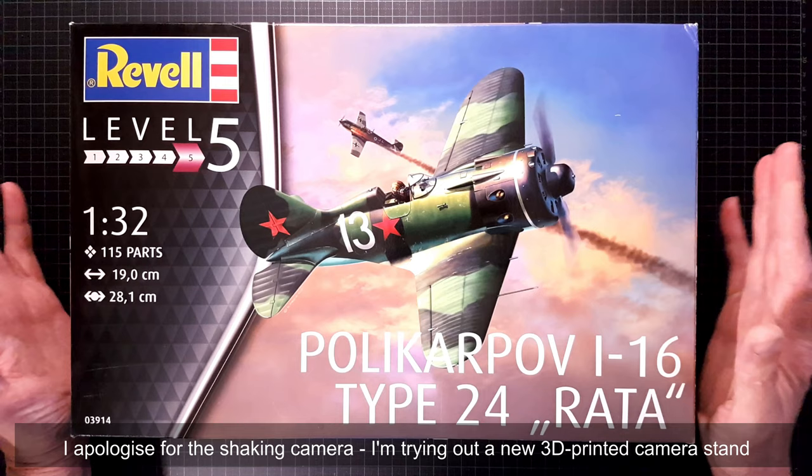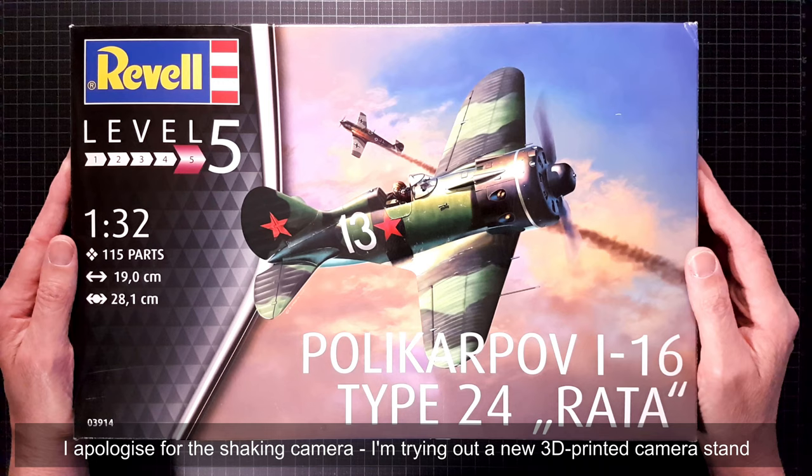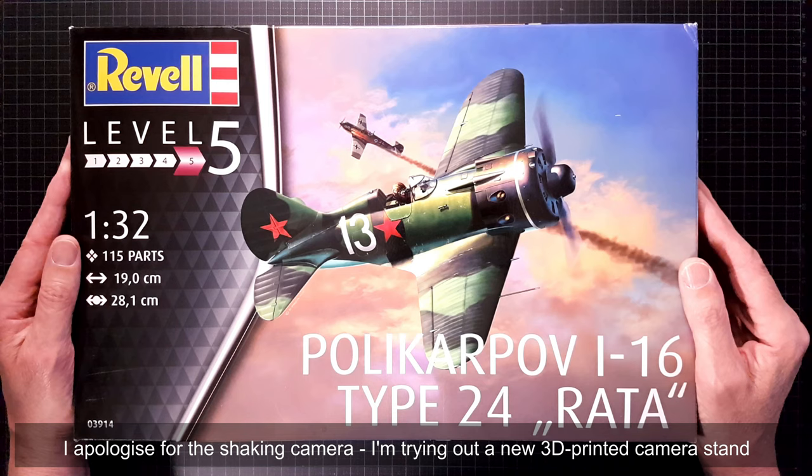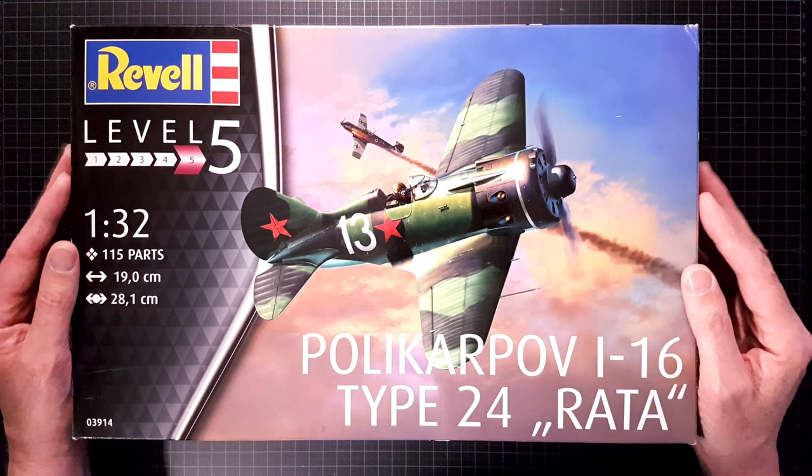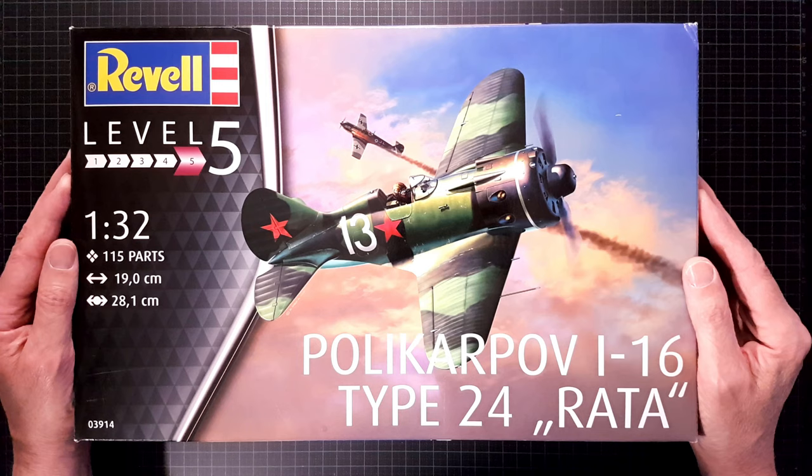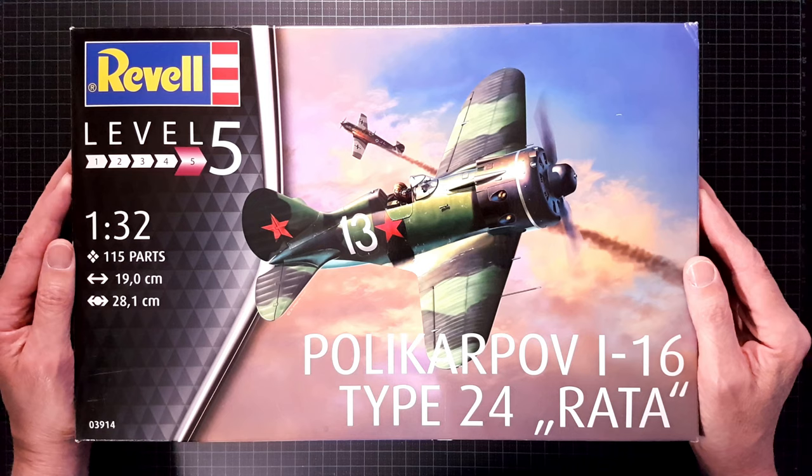This kit is a rebox of plastic from ICM. I bought this kit because the MiG-25 rebox that Revell did from ICM sprues looked so great, and I thought this was an interesting subject to have a closer look at. I also got it at a very good price - I paid something like 18 euros for this kit, which I think is quite a good price for a 1:32 scale.